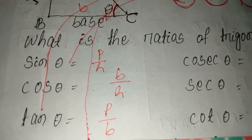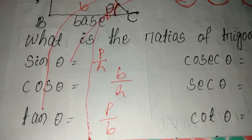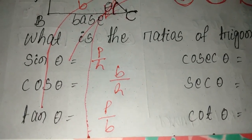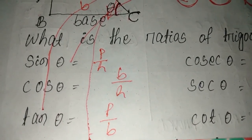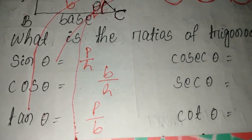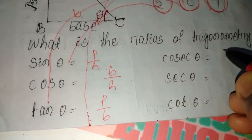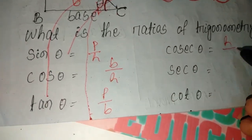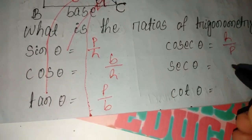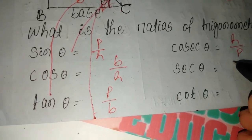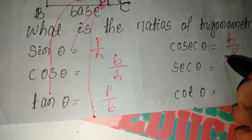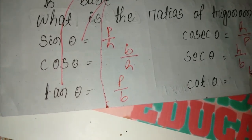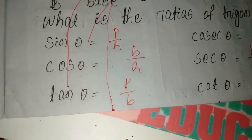Sin theta's reciprocal is cosec theta, cos theta's reciprocal is sec theta, and tan theta's reciprocal is cot theta. So cosec theta is H by P, sec theta is H by B, and cot theta is B by P.